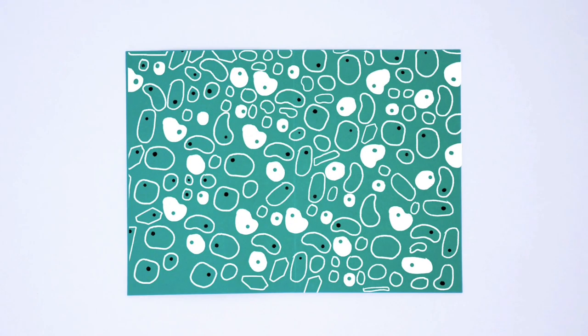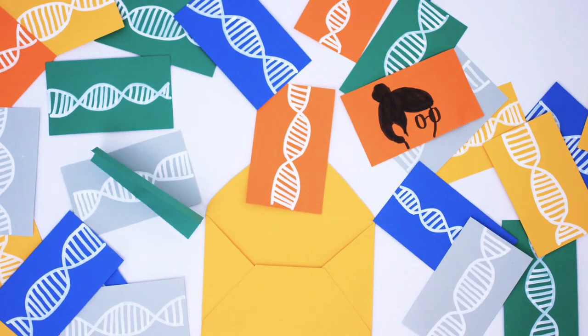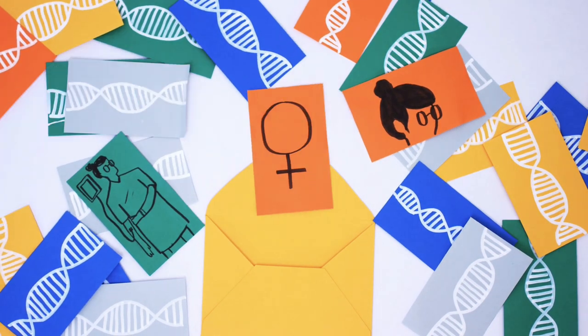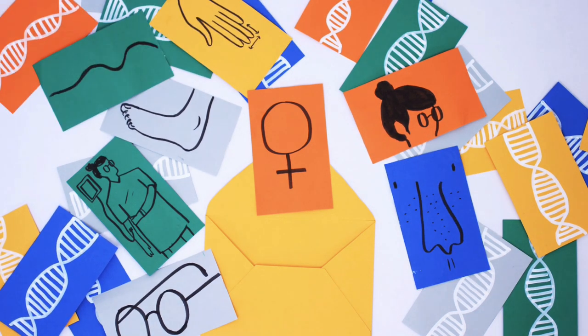There are trillions of cells in our bodies, and each one contains a parcel of important information. From the color of our hair to our risk of developing certain diseases, the information that determines all of our physical characteristics can be found in our DNA.